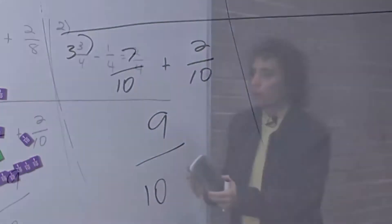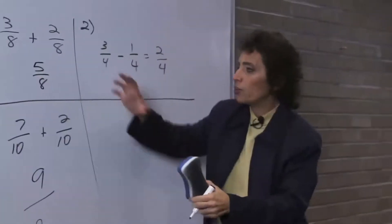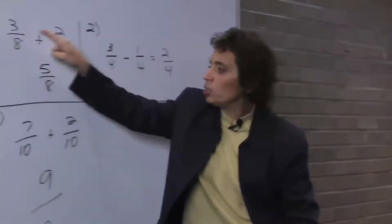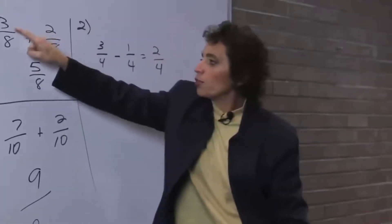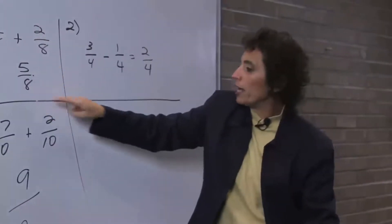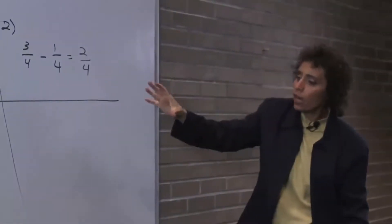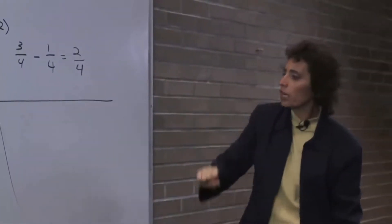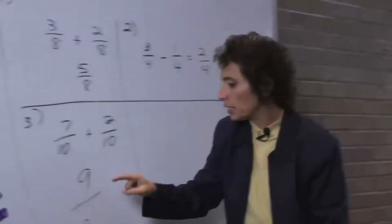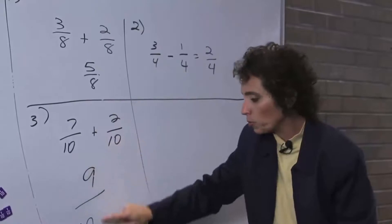So what is that telling me? That's telling me — remember this was 5 eighths — if my denominators are the same, all I have to do is combine the numerators, keep the denominator. 3 plus 2 is 5, keep the denominator 8. Because the denominator is the like term. Combine the top, keep the like term. 3 minus 1 is 2, keep the like term — the 4, the denominator. 7 plus 2 is 9, keep the like term with a 10. That's all we're doing.